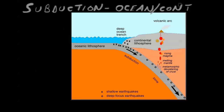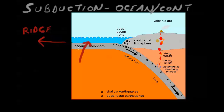In an ocean-continental subduction boundary, we have an ocean plate subducting or going underneath the continental plate. The ocean plate forms way out at a ridge, and the farther you get from the ridge, the older the crust gets and the denser it becomes. This ocean crust is basalt, while most continental crust is granite. Because basalt has greater density, when it meets the continental crust it subducts or dives underneath.